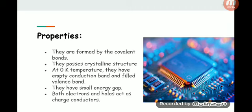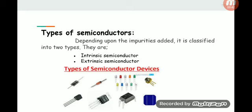Types of semiconductors: Depending upon the impurities added, it is classified into two types. They are intrinsic and extrinsic semiconductors. These are all the devices made by semiconductors.